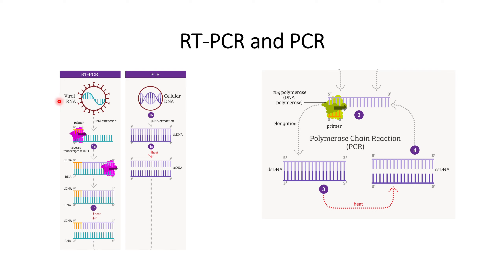First, the sample is collected, and from the sample the RNA needs to be extracted. There are different strategies that are performed to extract RNA based on the kind of sample. Once the RNA is extracted, we need to convert this RNA to get the genetic information as DNA, and in order to do this we use cDNA.